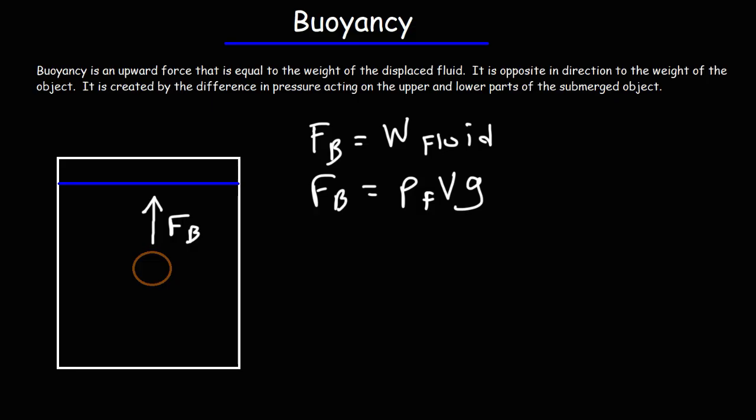Now, you can't really change the density of the fluid. The density of water is, for the most part, fixed. It's 1 gram per milliliter or 1,000 kilograms per cubic meter. That's the density of water.